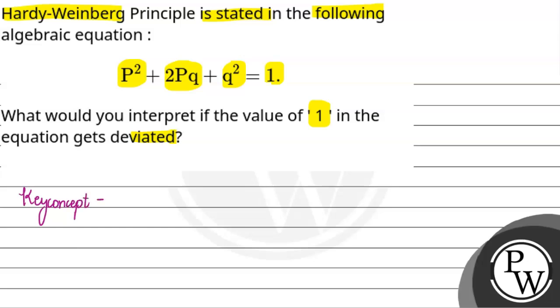If we can see the key concept here, the equation P² + 2Pq + q² = 1 is a binomial expression. This is the binomial expansion of (p + q)². You know that this formula we can use particularly to calculate the genetic variation.